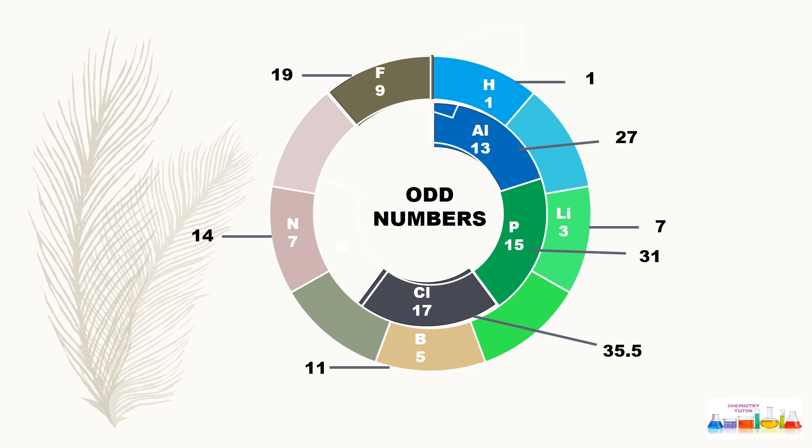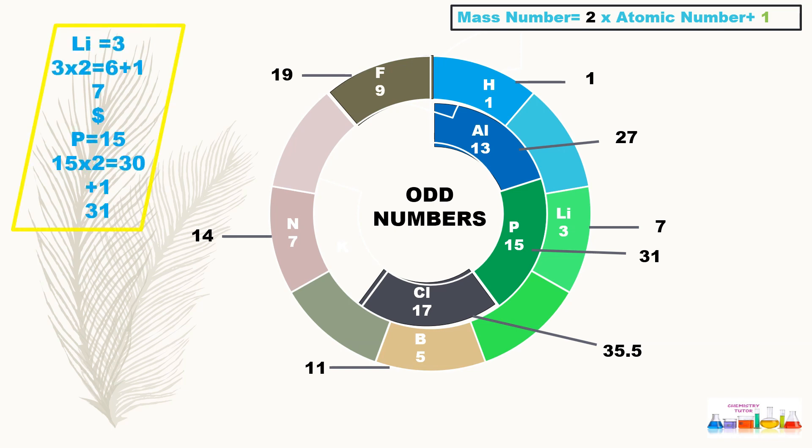Now what can we do to memorize the mass number of these odd number elements? We can learn this formula: mass number equals 2 times atomic number plus 1. For example, lithium is 3. If we multiply 3 by 2 it becomes 6, and we add 1 to get 7, which is the mass number of lithium. Similarly, if we take phosphorus which is 15, 15 times 2 is 30 plus 1 is 31, which is the mass number of phosphorus.